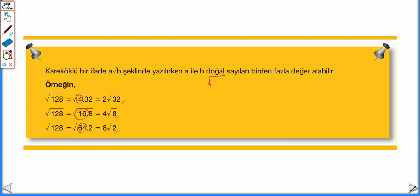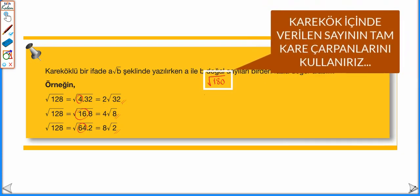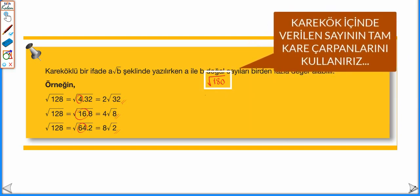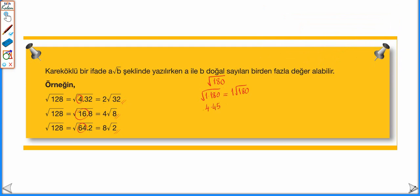Örneğin √180 sayısında, 180'in tam kare çarpanlarını kullanarak A√B şeklinde birden fazla yazabiliriz: 1 × 180 → 1√180; 4 × 45 → 2√45; 9 × 20 → 3√20; 36 × 5 → 6√5. Dolayısıyla √180 sayısı 4 farklı şekilde A√B şeklinde yazılmış olur.